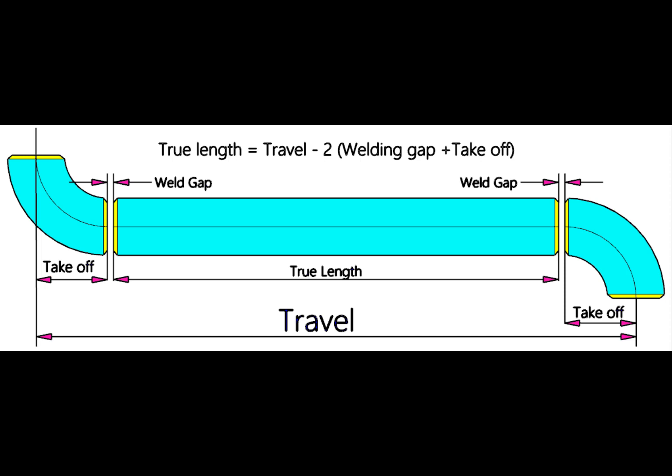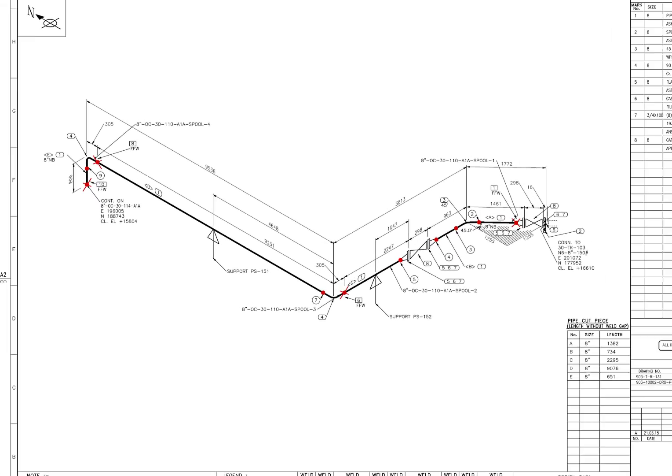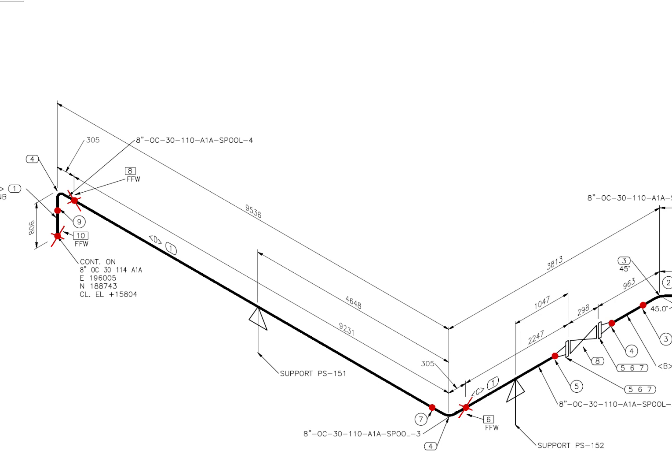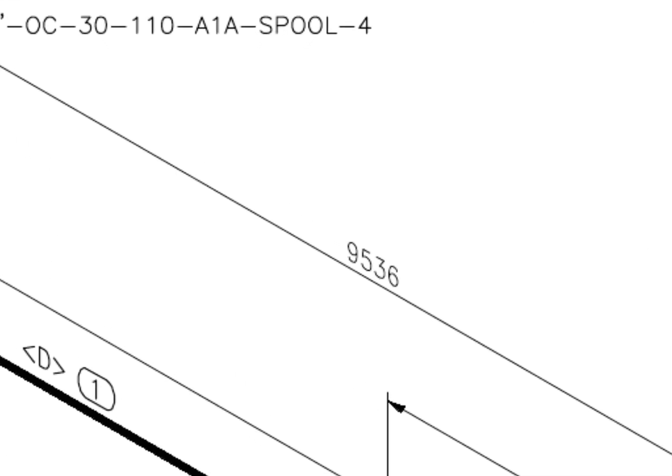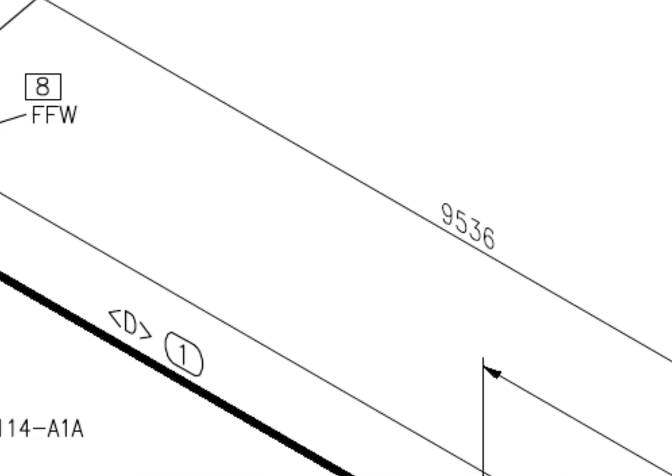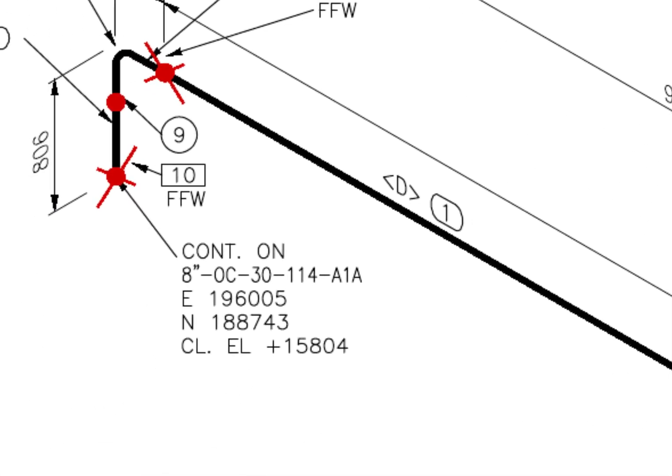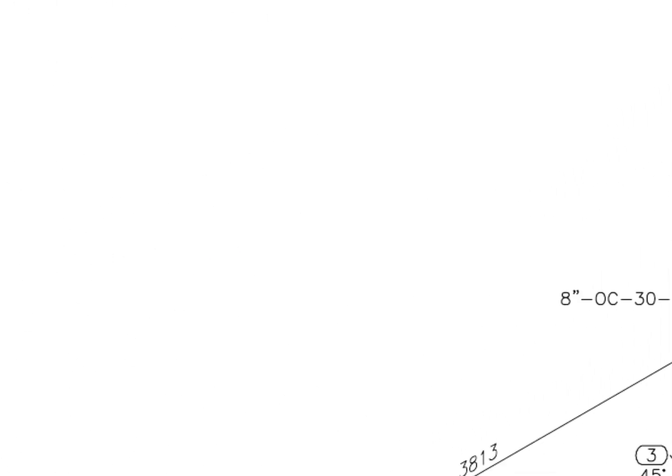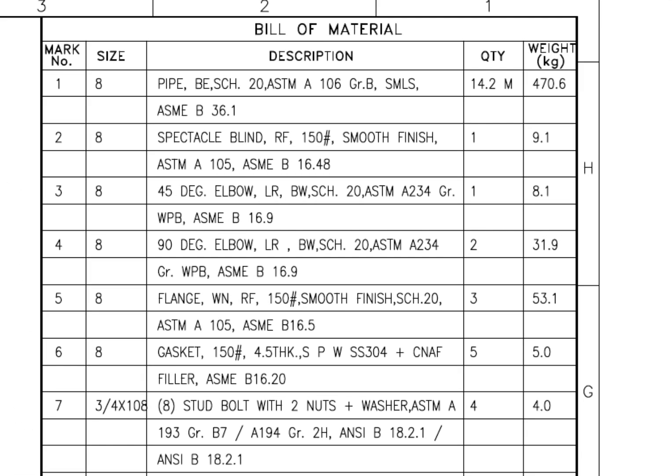Let us go to some examples. Here the travel length is 9536. Let us check the diameter of the pipe. What is the item number? Item number is 1. Go to the material list. Item number 1 is bevel end, schedule 20, seamless pipe.